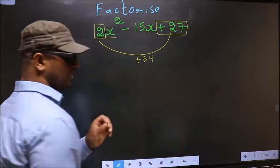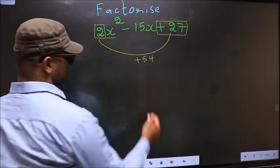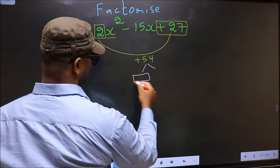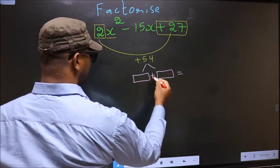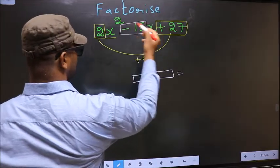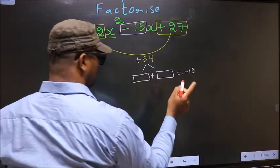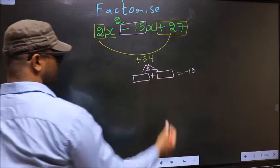This is your step 1. Next, now you should look out for 2 numbers such that when you add these 2 numbers, you should get middle coefficient minus 15 and also when multiplied, you should get plus 54.